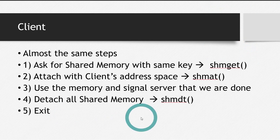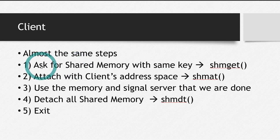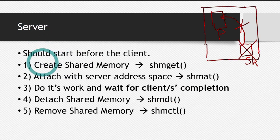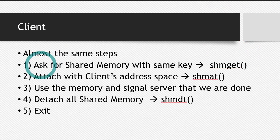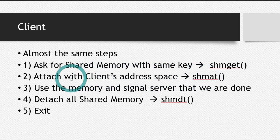Now let's look at the client side programming. The steps are almost the same except a few changes. The first step is ask for the shared memory with the same key, using the same system call shmget. Focus on the word 'ask' here — in the server side programming we wrote 'create shared memory,' but in the client side programming it is 'ask for shared memory.' Only the server creates the shared memory; the client never creates the shared memory.